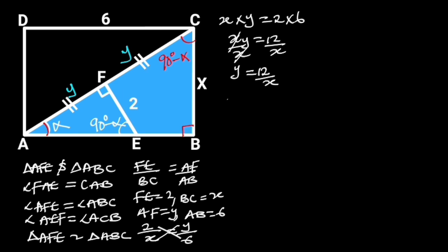Next, let's consider triangle ABC. Since triangle ABC is a right triangle, from Pythagoras theorem, AC squared is equal to CB squared plus AB squared. AC is equal to Y plus Y, which is equal to 2Y. CB is equal to X, and AB is equal to 6.